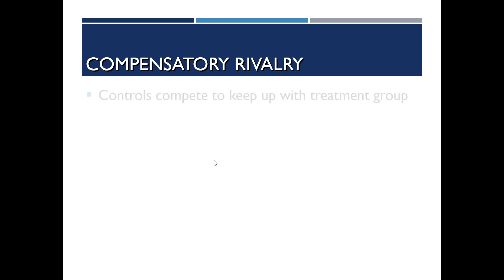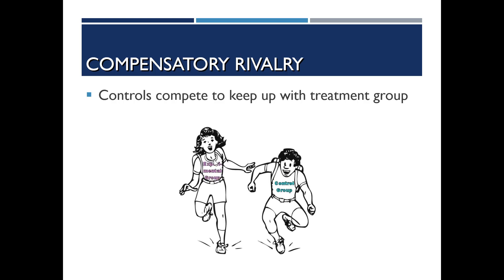Compensatory rivalry is where the control group competes to keep up with the treatment group. If the experimental group is getting something special and the control group knows it, they may try extra hard to keep up. For instance, if a child in the control group hears that the treatment group is learning cool reading comprehension material, the control group might form a study group and try to learn on their own.